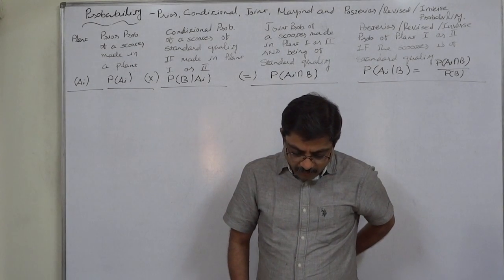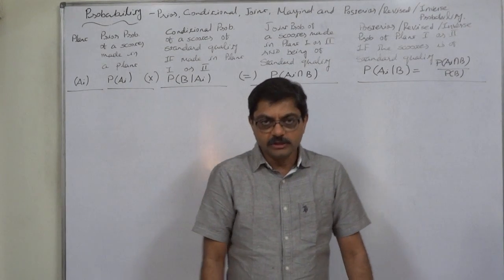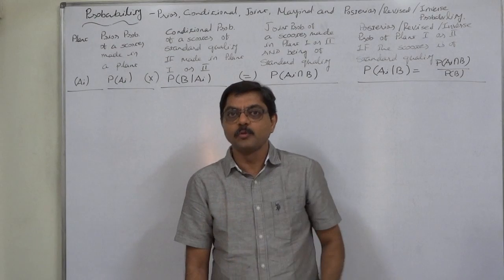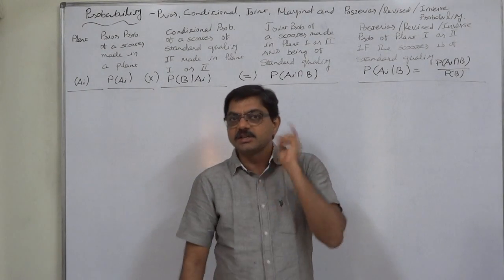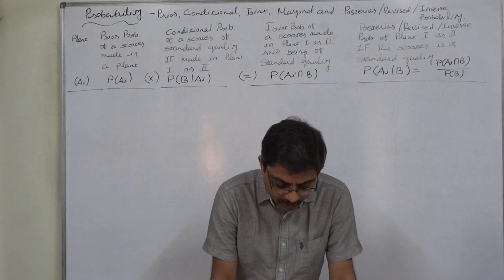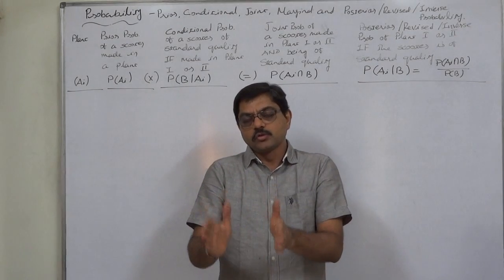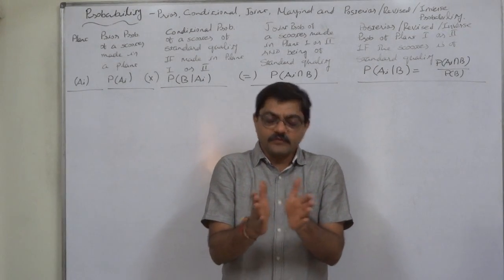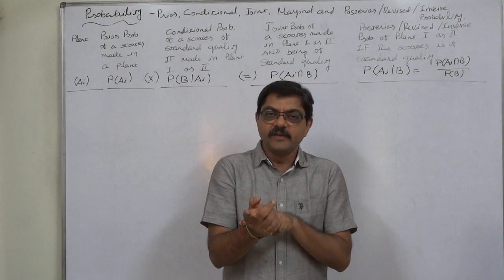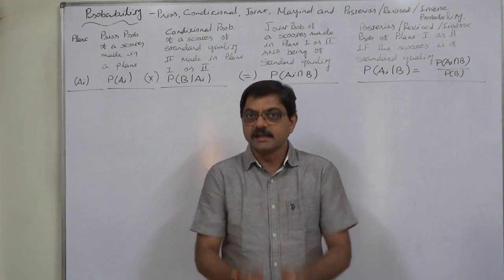At plant one, 85 out of 100 scooters are rated standard quality or better. The probability of a scooter being of standard quality if manufactured at plant one is 85 out of 100, that is 0.85 or 85%. This is conditional probability. At plant two, only 65 out of 100 scooters are rated standard quality, so probability is 0.65. The quality of a scooter is dependent on whether it was manufactured at plant one or two — hence it is conditional probability.